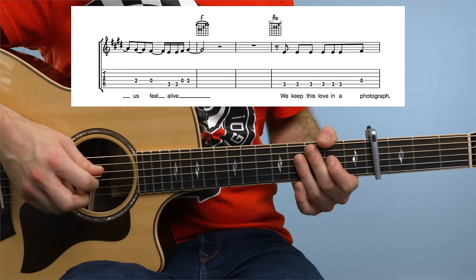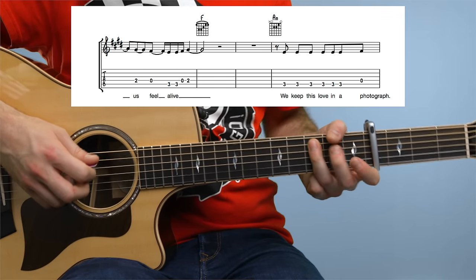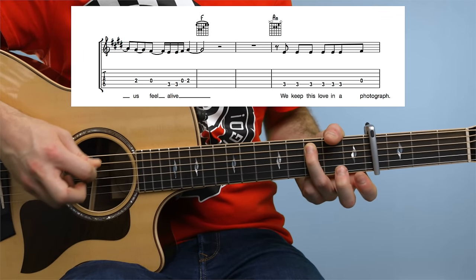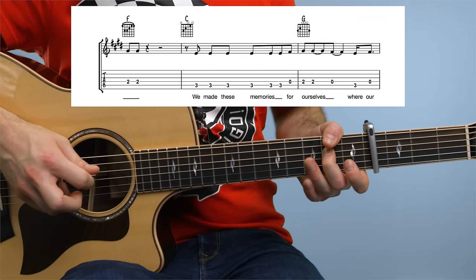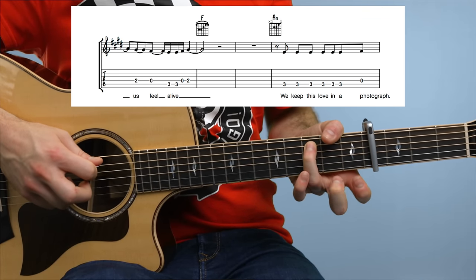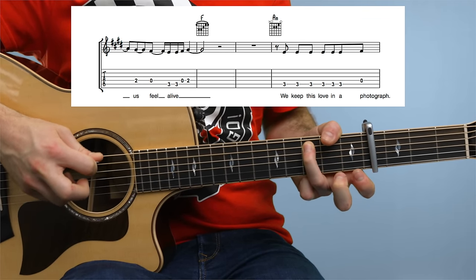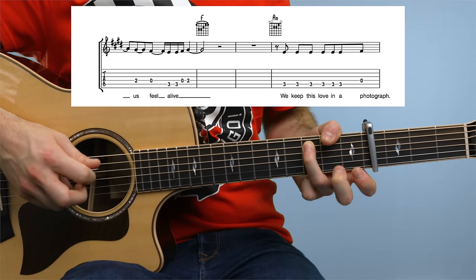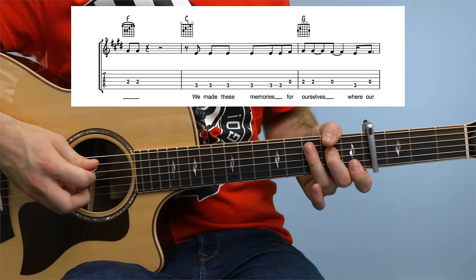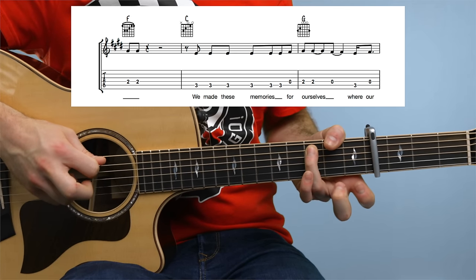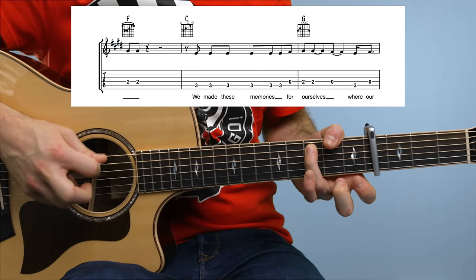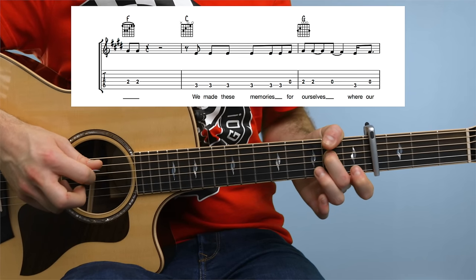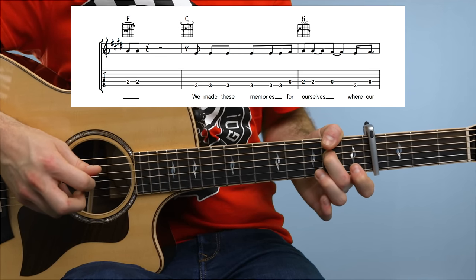And this is where the pre-chorus begins. The first phrase goes like this. 6-3s on the fifth string, 0-2-0-2 on the fourth. You play this phrase once more. Then it's 0 on the fourth string.